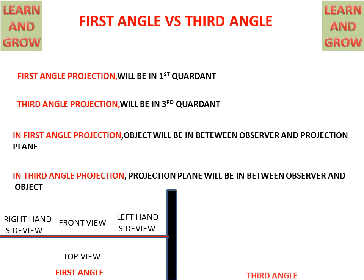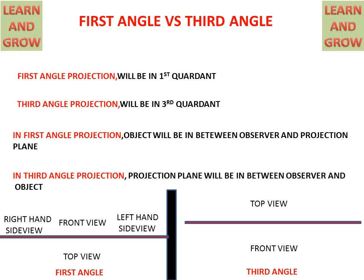And in third angle projection, this is the reference line. The top view will be on the top and the front view below the top view. The left hand side view will be on the left hand side of the front view, and the right hand side view will be on the right hand side of the front view. This is third angle projection.